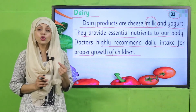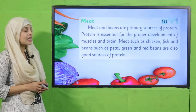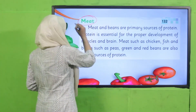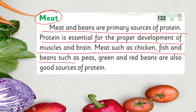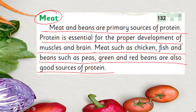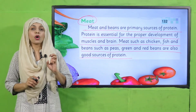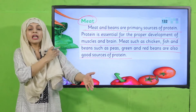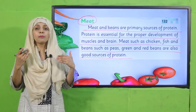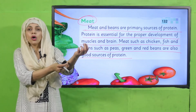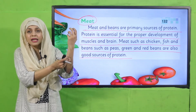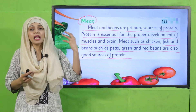Number three is meat. 'Meat and beans are a primary source of protein. Protein is essential for the proper development of muscles and brain. Meat such as chicken, fish, and beans such as peas, green and red beans, are also a good source of protein.' Meat is very important and provides us with protein which is for muscle building and body development.